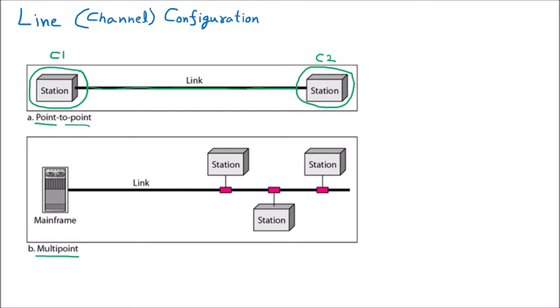There are various other names for point-to-point. Some people call it peer-to-peer, P2P, or unicast. Unicast means sending in a single direction to a single person. The important thing about this configuration is that it is a direct line — when two computers are there, they are connected with a direct, dedicated line.